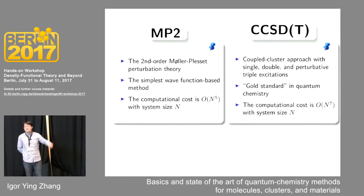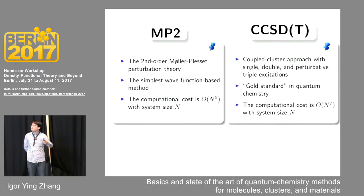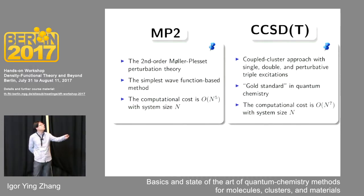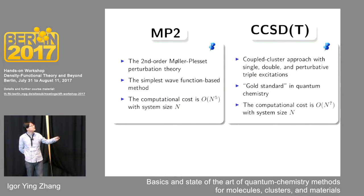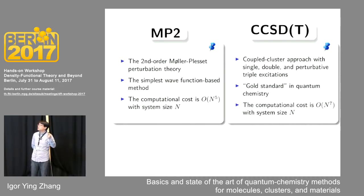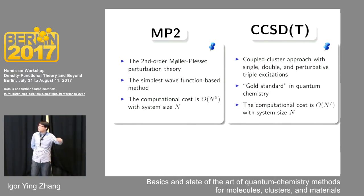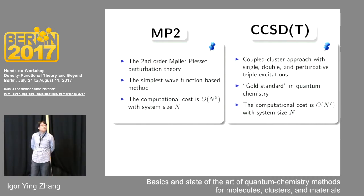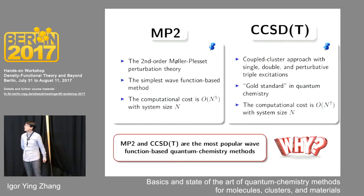MP2 and CCSD(T) are the two most widely used quantum chemistry methods at present. They are called the second-order Møller-Plesset perturbation theory and the coupled cluster approach with single, double, and perturbative triple excitations. MP2 is the simplest wave function-based method, and its computational cost scales as fifth order with respect to system size — one order of magnitude higher than hybrid functionals such as PBE0, B3LYP, or HSE. CCSD(T) is considered the gold standard in quantum chemistry and can be very accurate; however, its computational cost is two orders of magnitude higher than MP2.